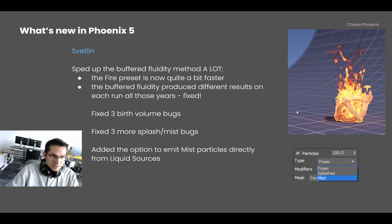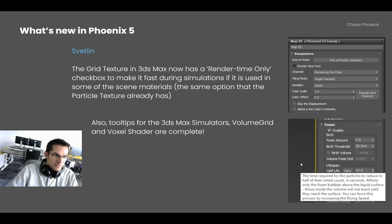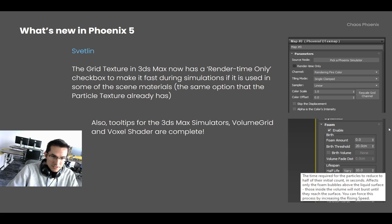After the Phoenix 5 release, I managed to speed up the buffered fluidity method a lot — so the toolbar fire preset is now much faster. The buffered fluidity method also used to produce different results every time you ran it, and that is now fixed. I fixed some bird volume issues, some splash and mist issues, and added the ability to spawn mist particles directly from the Phoenix source. The grid texture in Max also has a new render-time-only option, which lets you simulate faster when the grid texture is used over a material that updates in the viewport.